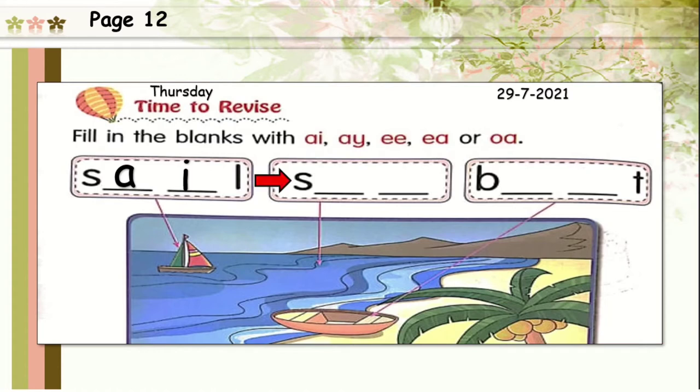The next one, what can you see? Where does the arrow show? Yes, the arrow shows the sea. So how do you spell sea? S-E-A. Good job! S-E-A.